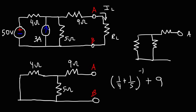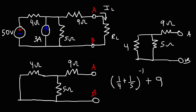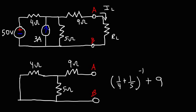This is point A and this is point B. Here's the 9 ohm resistor, the 4 ohm, and the 5 ohm. Now you can see that the 4 and 5 ohm are in parallel with each other, but in series with the 9 ohm. The Thevenin resistance comes out to 11.2 repeating ohms.